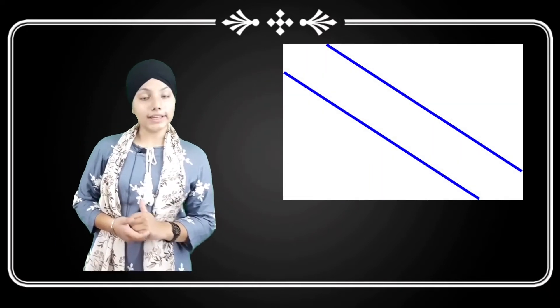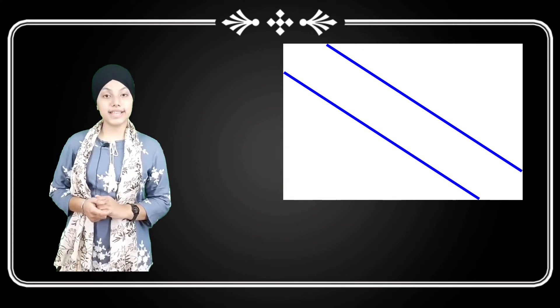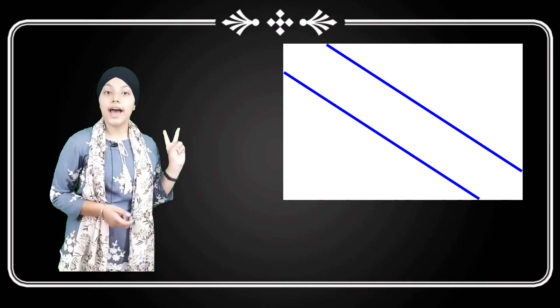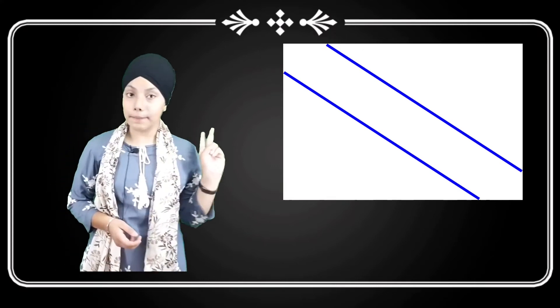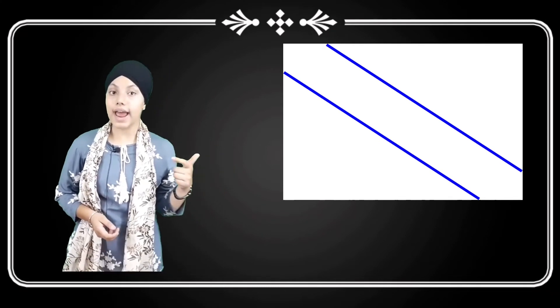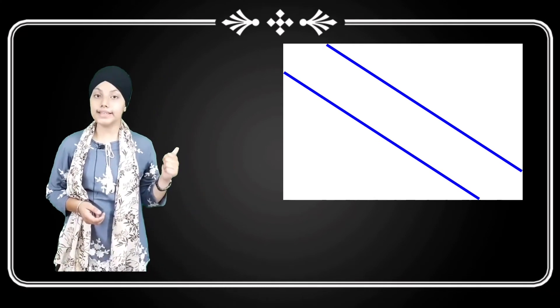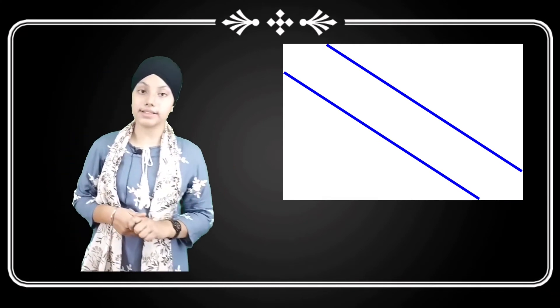Next, we have parallel lines. When two lines have the same distance and they do not meet or intersect at the same point, these are called parallel lines.